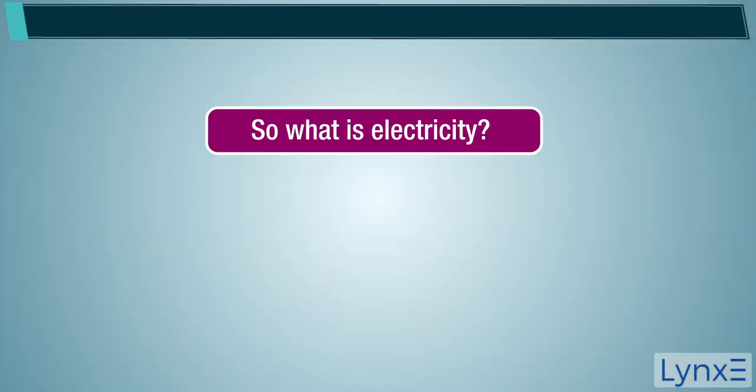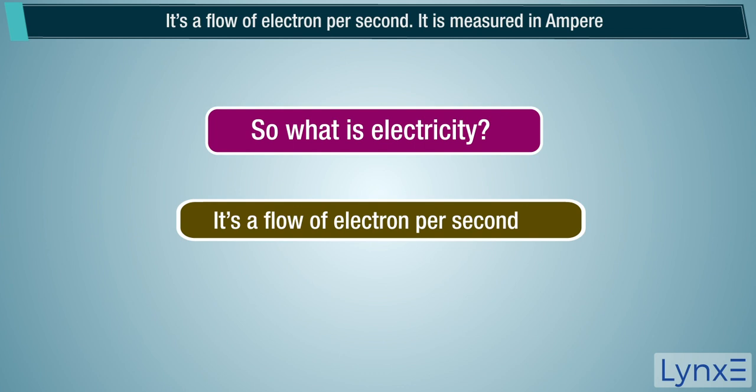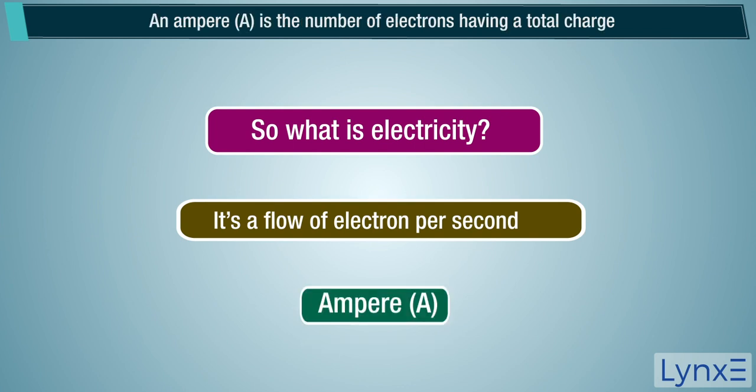So what is electricity? It's a flow of electron per second. It is measured in ampere. An ampere is the number of electrons having a total charge of one coulomb moving through a given cross section in one second.